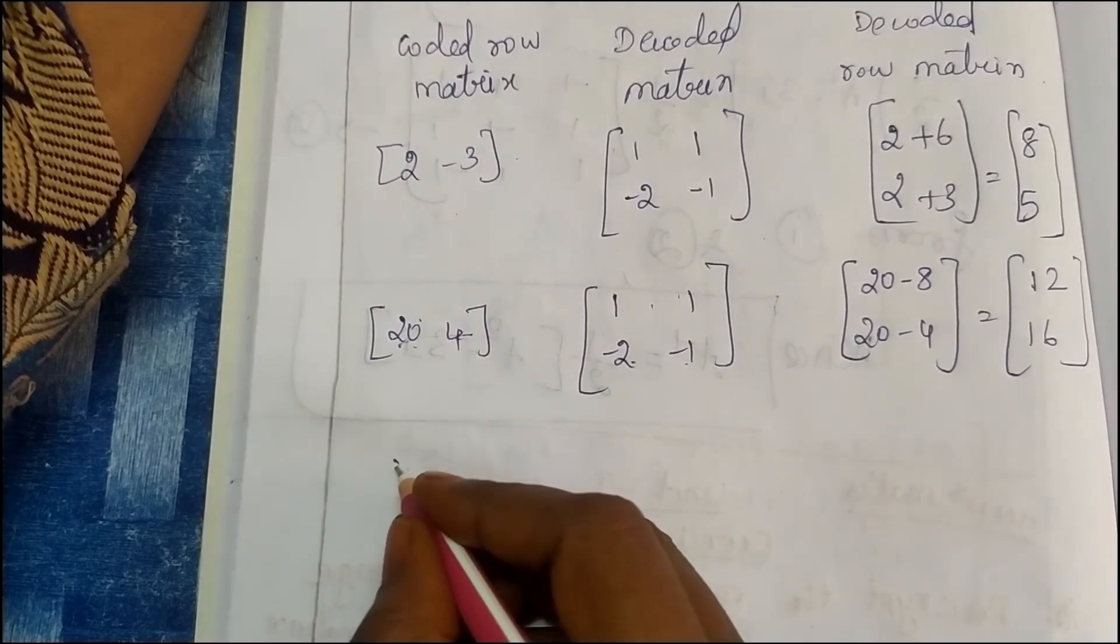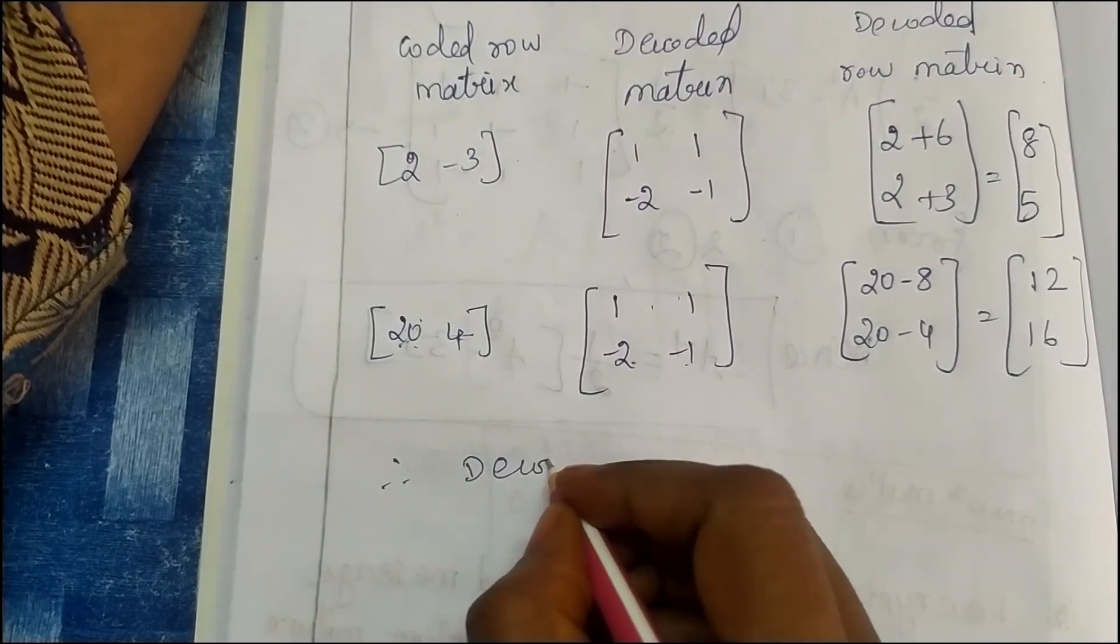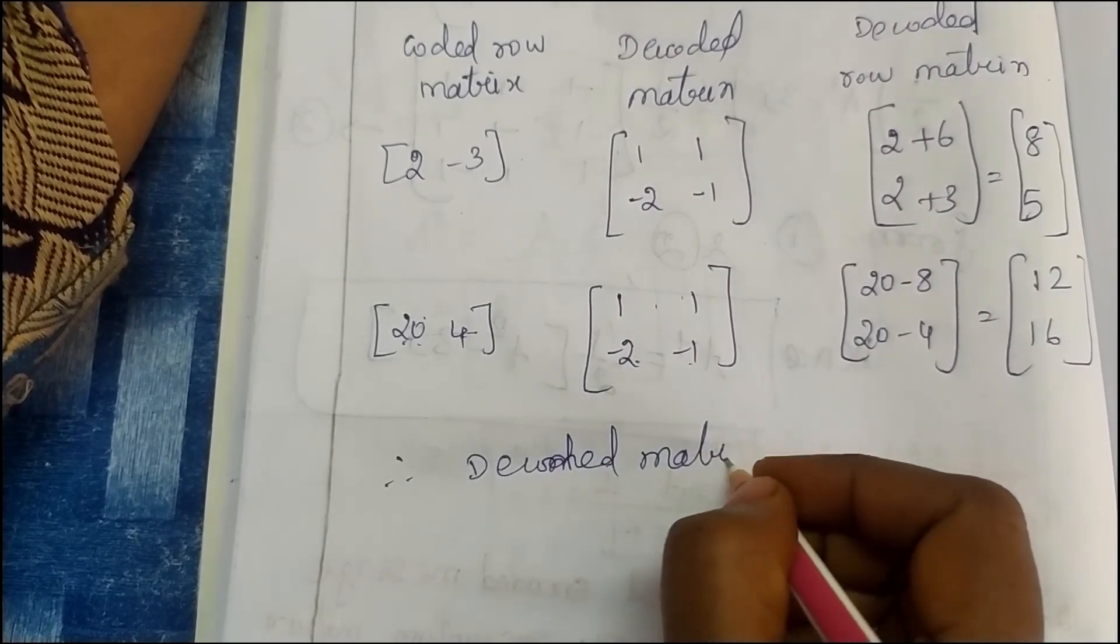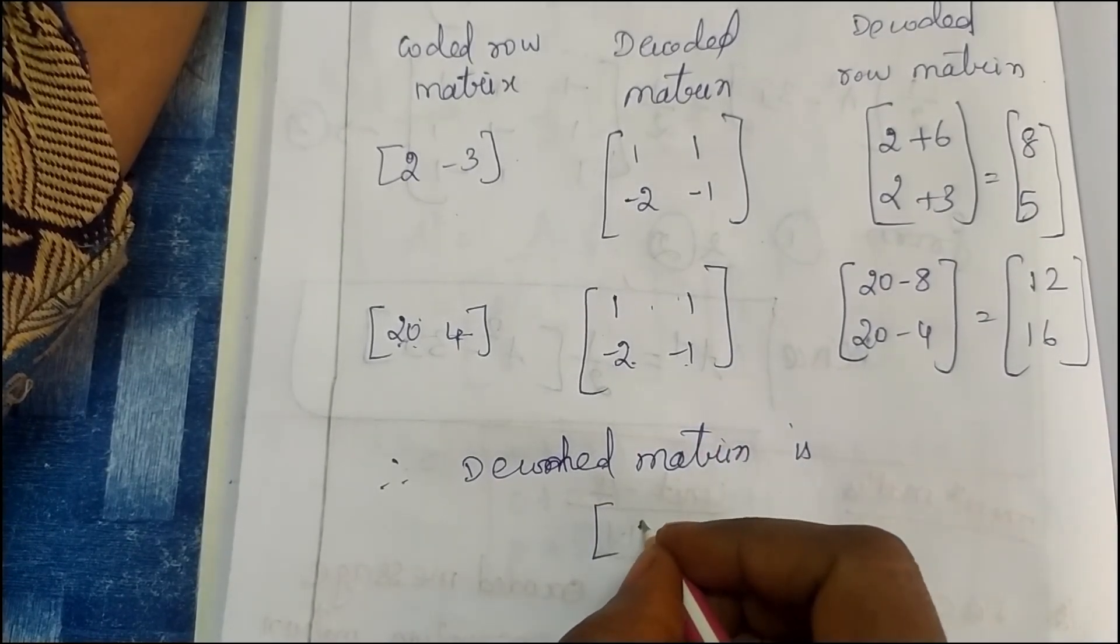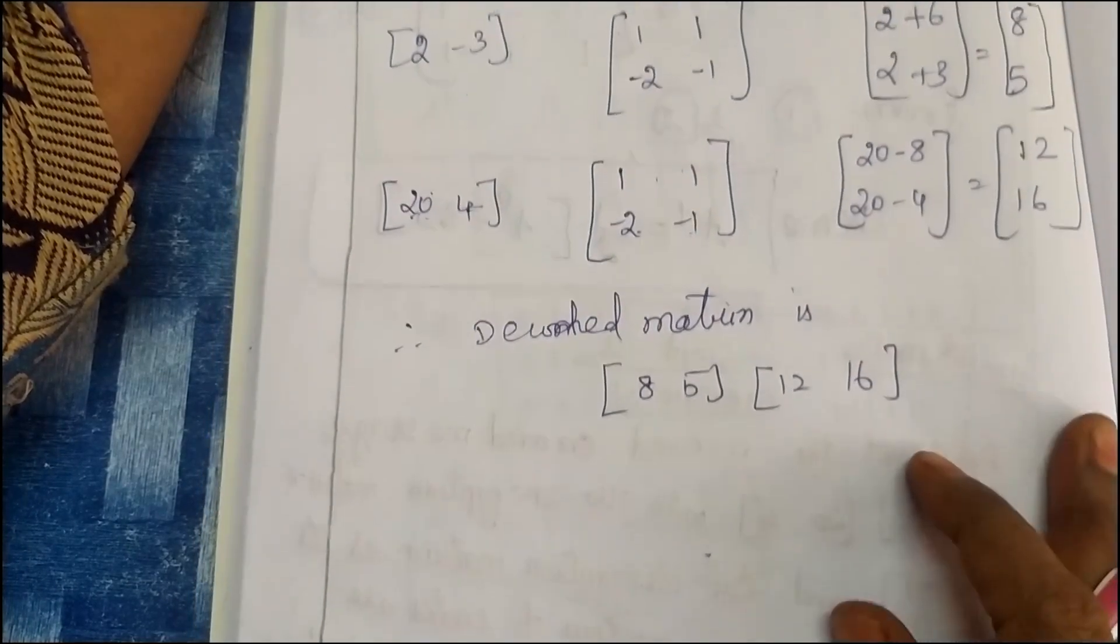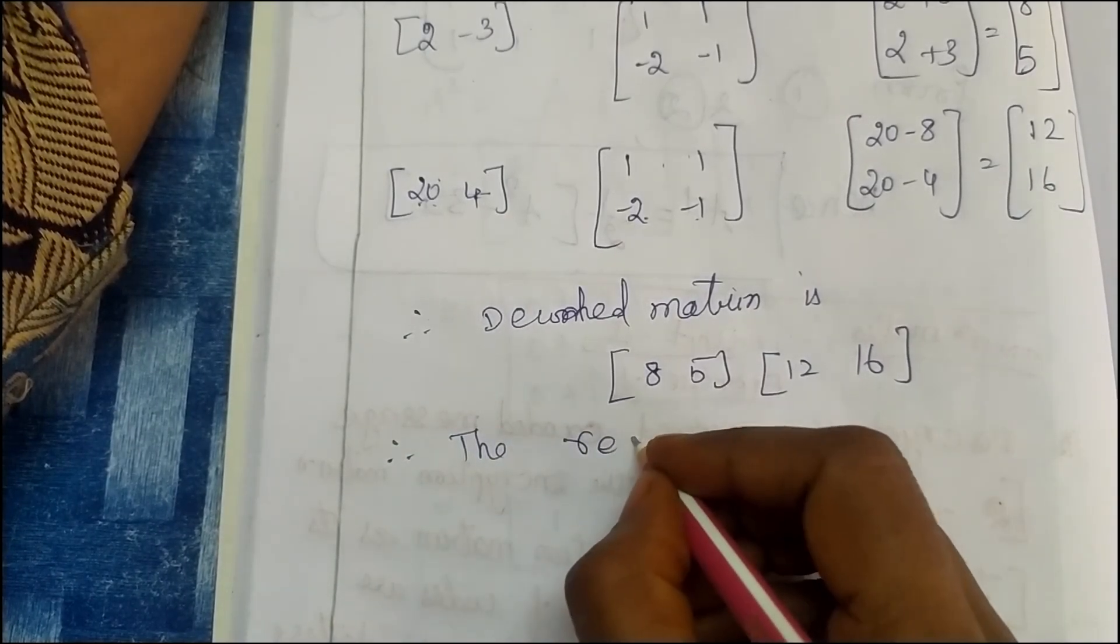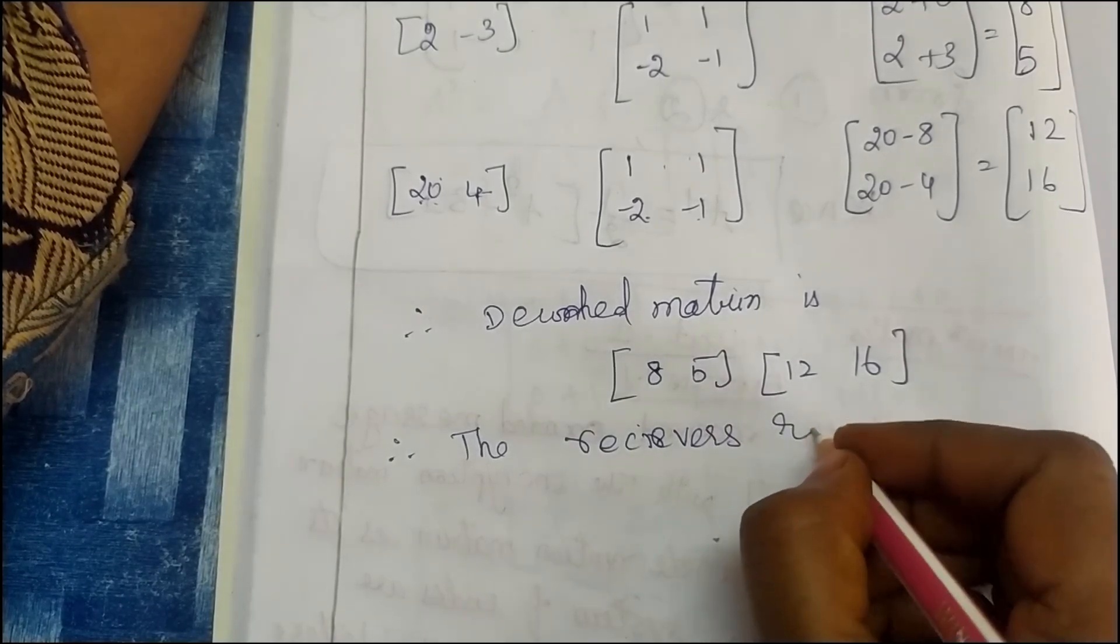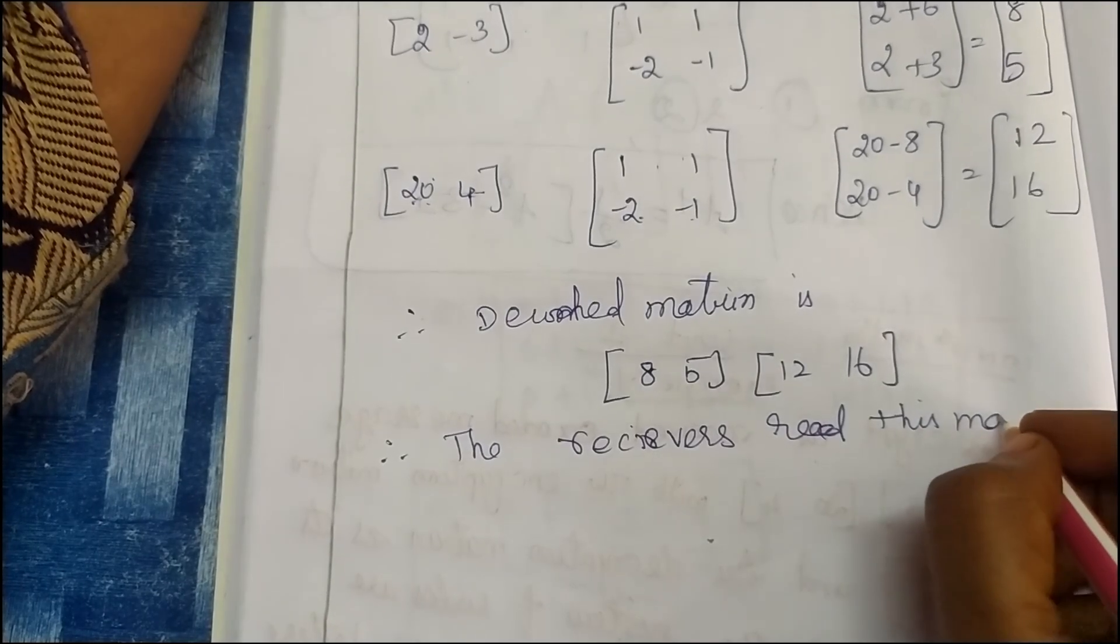Therefore, the decoded matrix is 8, 5, 12, 16. Therefore, the receiver reads the message.